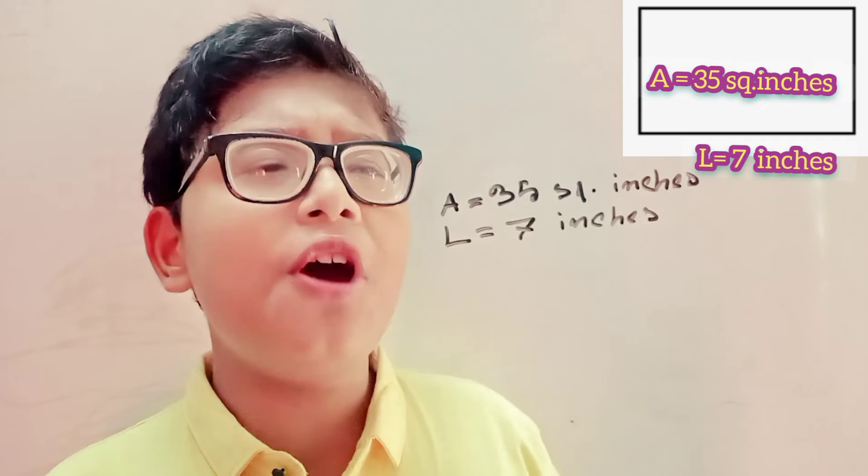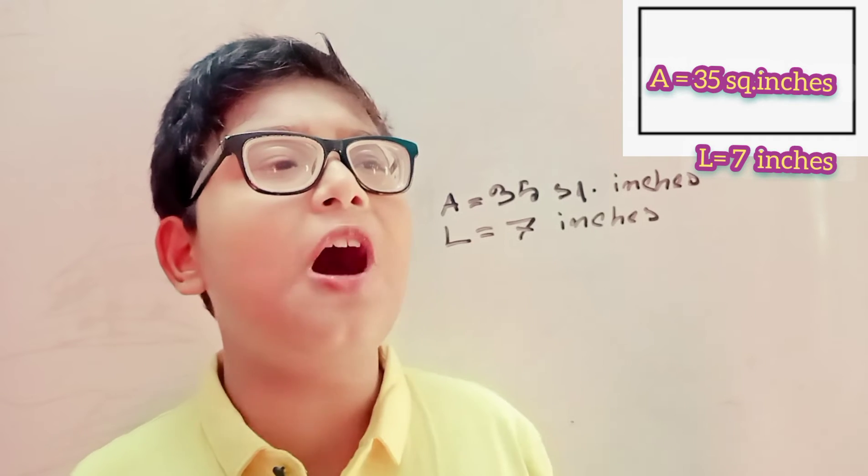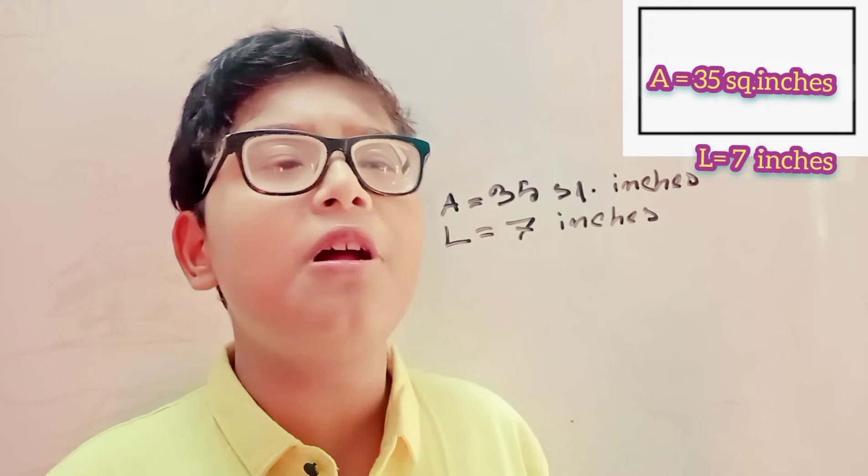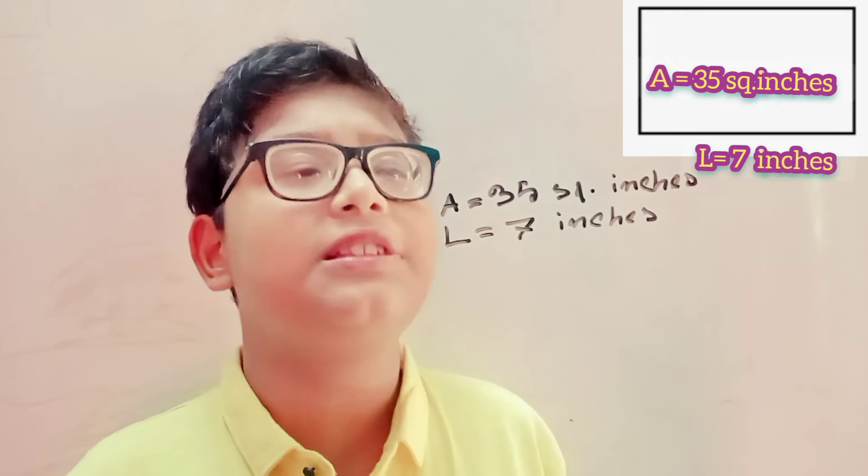We know that surface area is found by multiplying the length by the width. This means 7 multiplied by something equals 35.